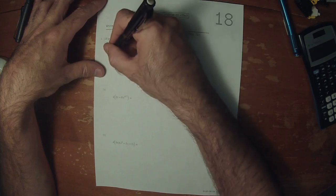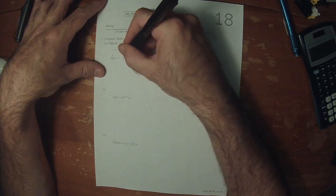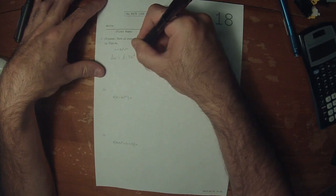So find dw. dw will be the differential of 3x squared e to 5x.